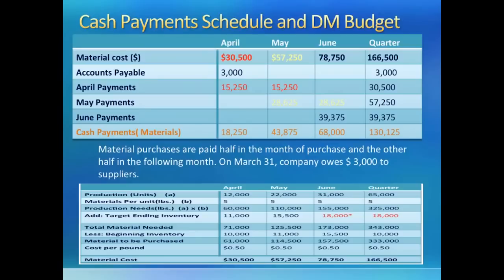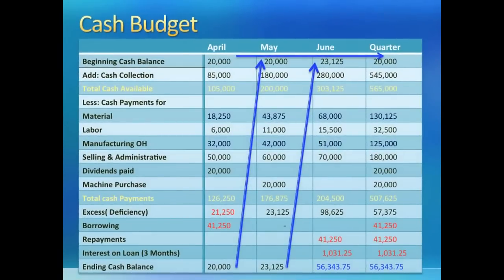Now we have all the numbers needed to make the cash budget. Cash budget is the hardest and the most popular for exams, so let's give it a very careful look. We will go month by month, because the ending balance of April will be the beginning balance of May and so on. We are given a beginning balance of April at $20,000. We add cash collections for the month from the cash collections schedule and get total cash available for April at $105,000.